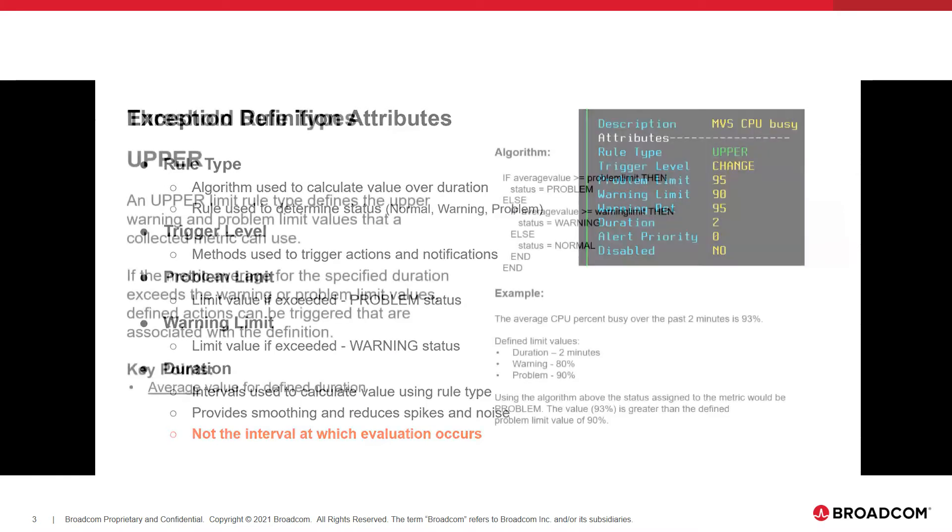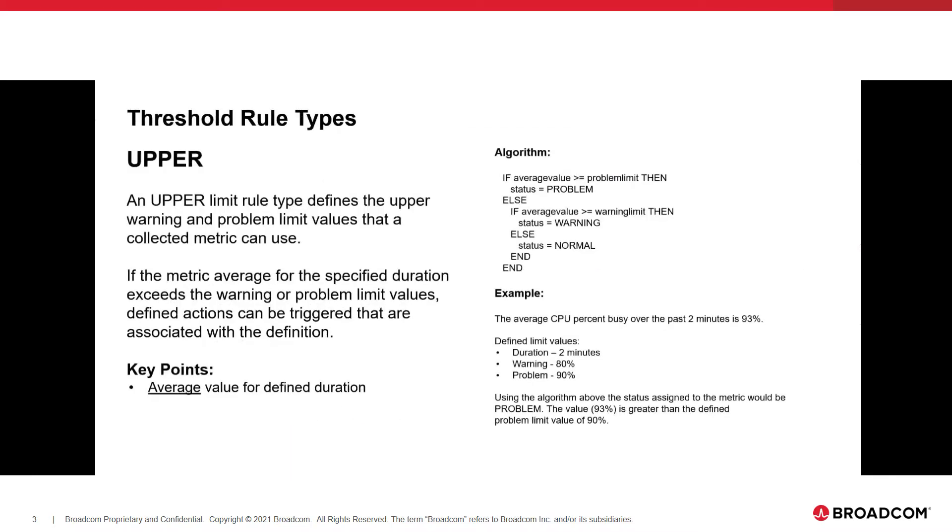So what we're going to talk about first is the upper rule type, which is one that exists, but let's make sure we understand how it works today, and then we'll talk about the new ones. An upper limit rule type defines the upper warning and problem limit values that a metric collection can use. If the metric average, specific word there is average, for the specified duration exceeds the warning or problem limit, then any defined actions can be triggered. The key point to this is, it's the average value for the defined duration. So if you have a duration of three, we will take the last three minutes or the last three collected pieces of data and average them and use that value to evaluate it against thresholds.